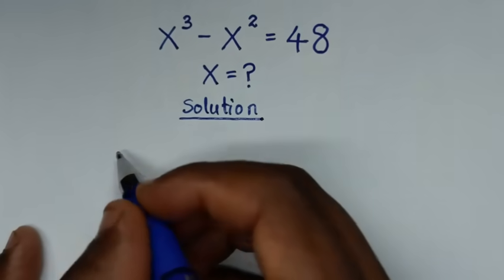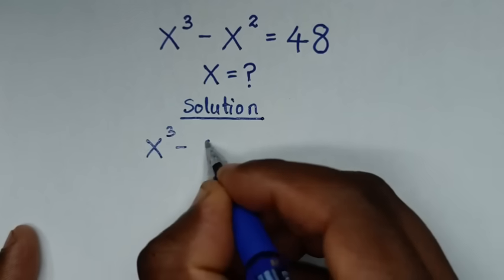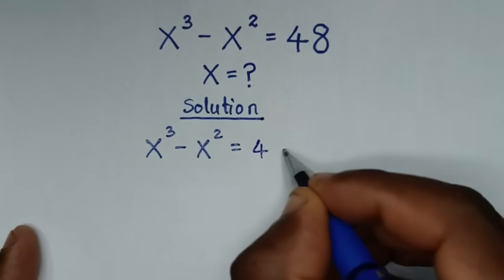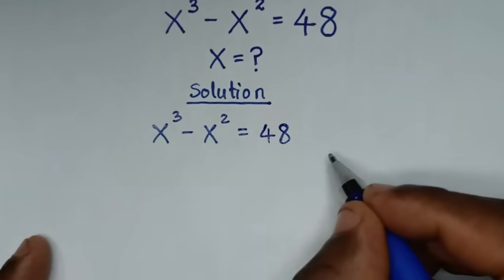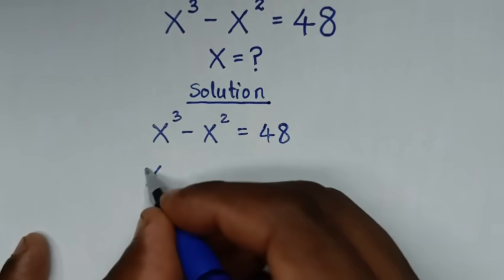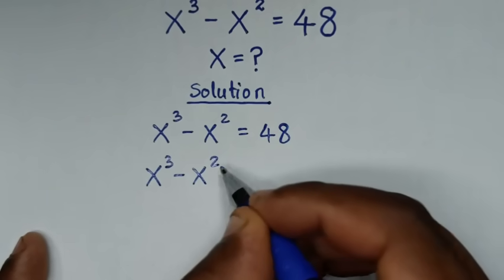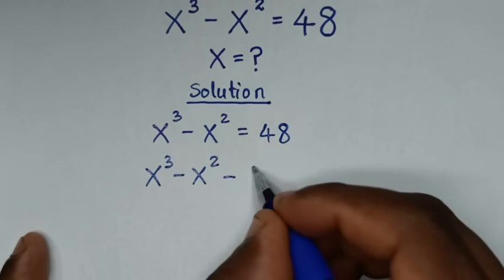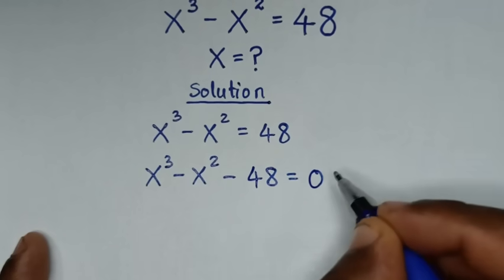From our problem, which is x³ minus x² is equal to 48. In the first step, we'll take 48 to the left side, so it will be x³ minus x² minus 48 is equal to 0.